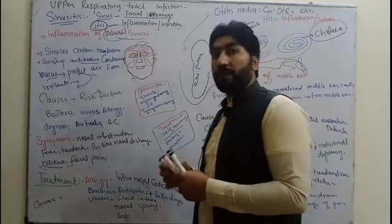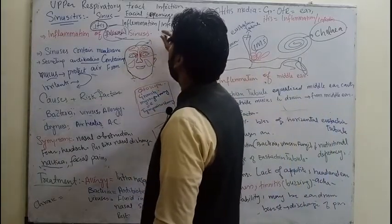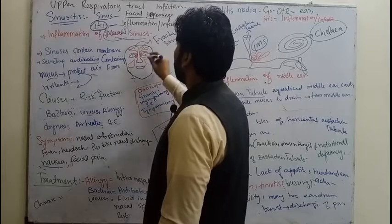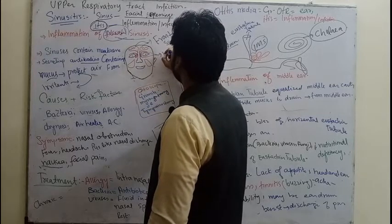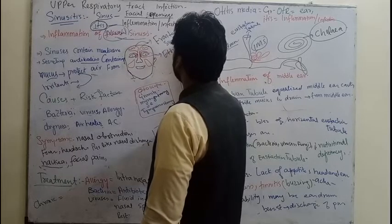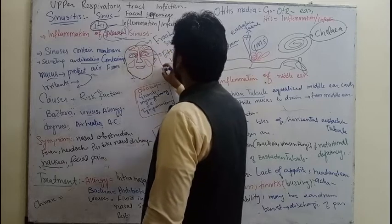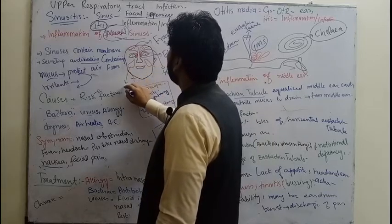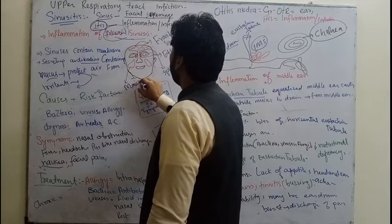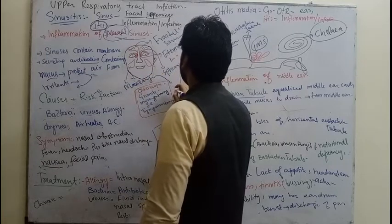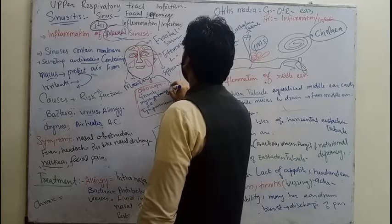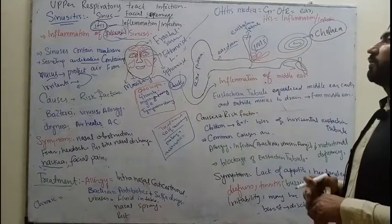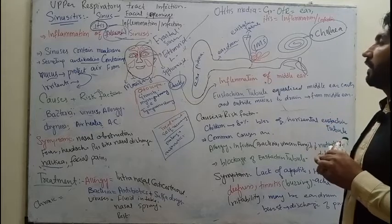We have four different types of sinuses. The pair of sinuses present in the forehead is named frontal sinuses. Another is named ethmoid sinuses. Then there is sphenoid sinuses. And the last one, the largest, is named maxillary sinuses — also called cheek sinuses, because it is present in the cheek position. Maxillary is the largest type of sinus.